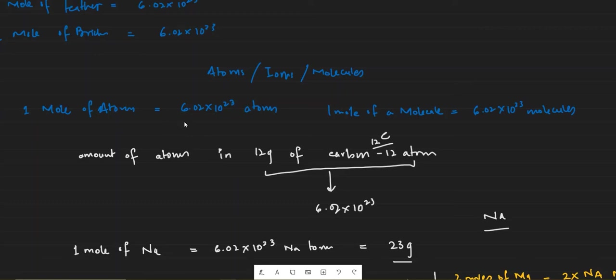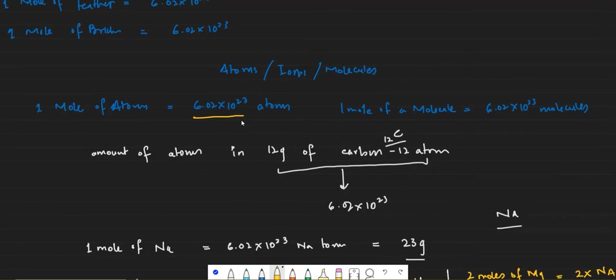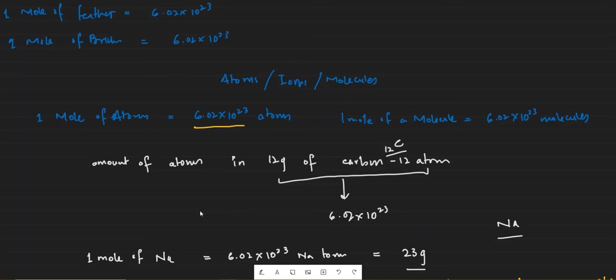Avogadro's number — 6.02 × 10²³ — is a huge number, and you have to take this many atoms to be able to weigh them, because an atom has a very small mass. One mole of different things will not have the same mass, but they will have the same number of particles, which is Avogadro's number.